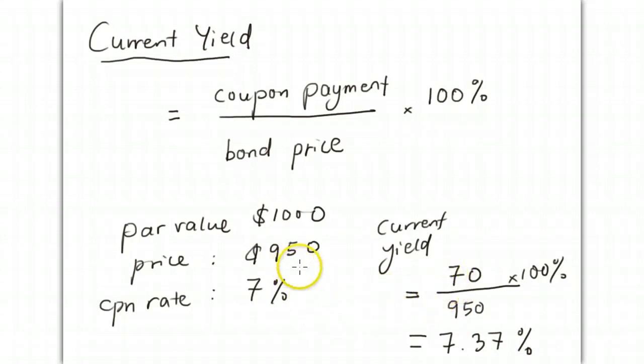If my current price is $1,000, it would be $70 ÷ $1,000 × 100% = 7%, so yield equals coupon rate. But if the bond is sold at a discount of $950, the current yield is higher than the coupon rate. Conversely, if the price is higher than par value, the yield would be lower than the coupon rate.